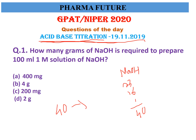If 40 grams dissolves in 1000 ml to give a 1 molar solution, then for 100 ml we calculate: the zeros cancel, giving 4 grams. So 4 grams is the right answer for this question.